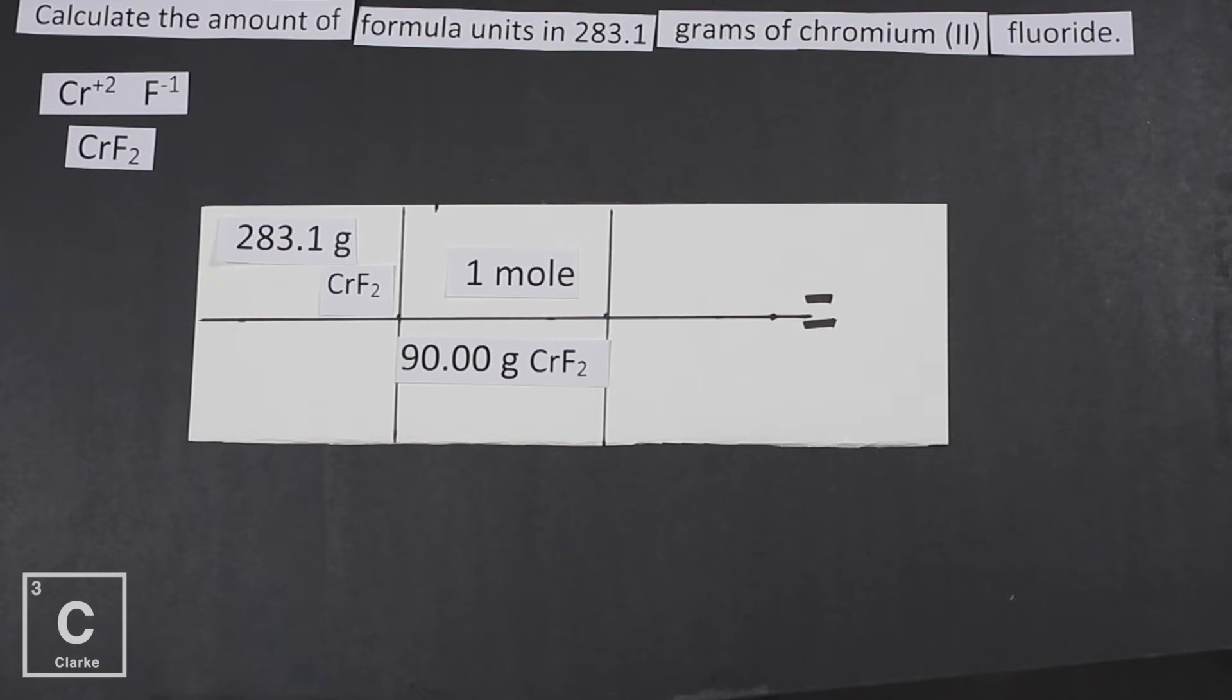So our grams cancel. We're left with a mole. Now we need to cancel our moles. So I'm going to put moles on bottom so they cancel out. And remember the other conversion factor we know is that one mole is equal to Avogadro's number, 6.02 times 10 to the 23rd. And in this case the particle we're talking about is formula units. Okay, so now our problem is set up.